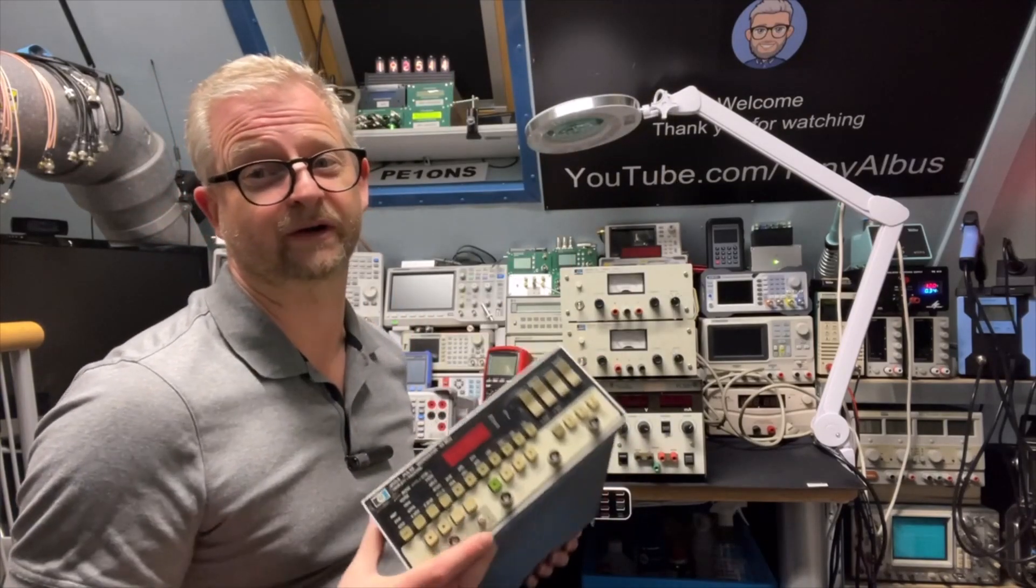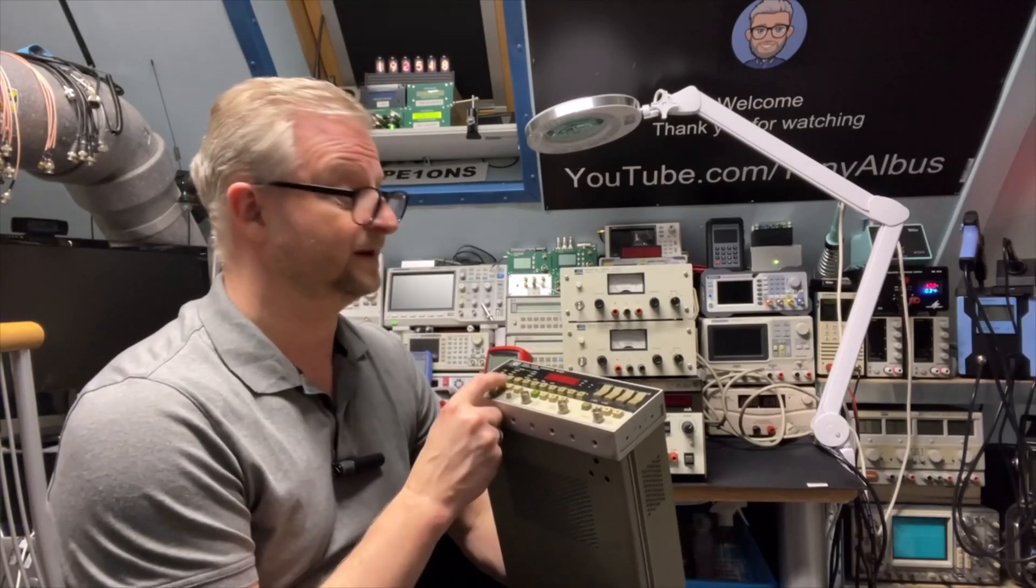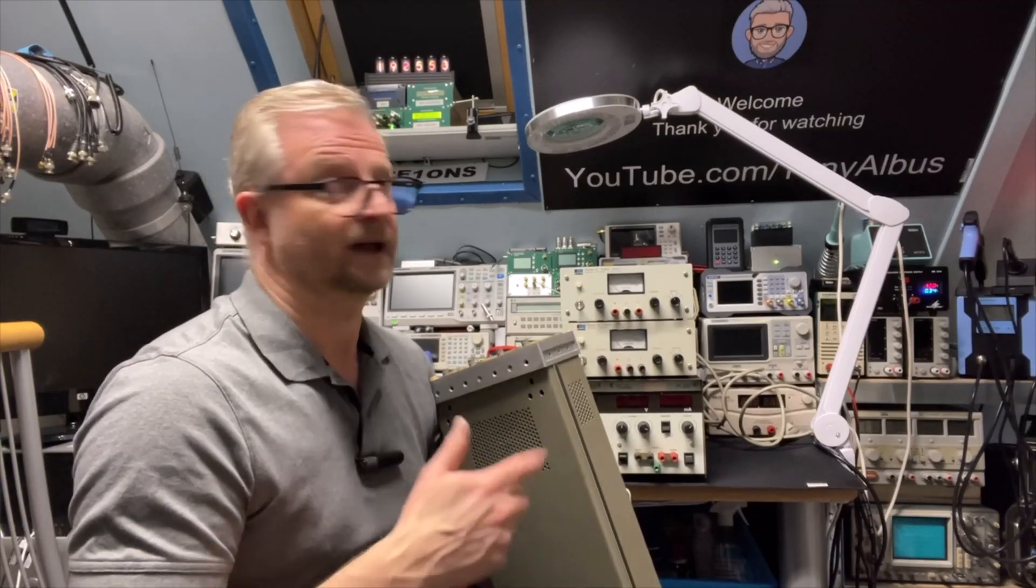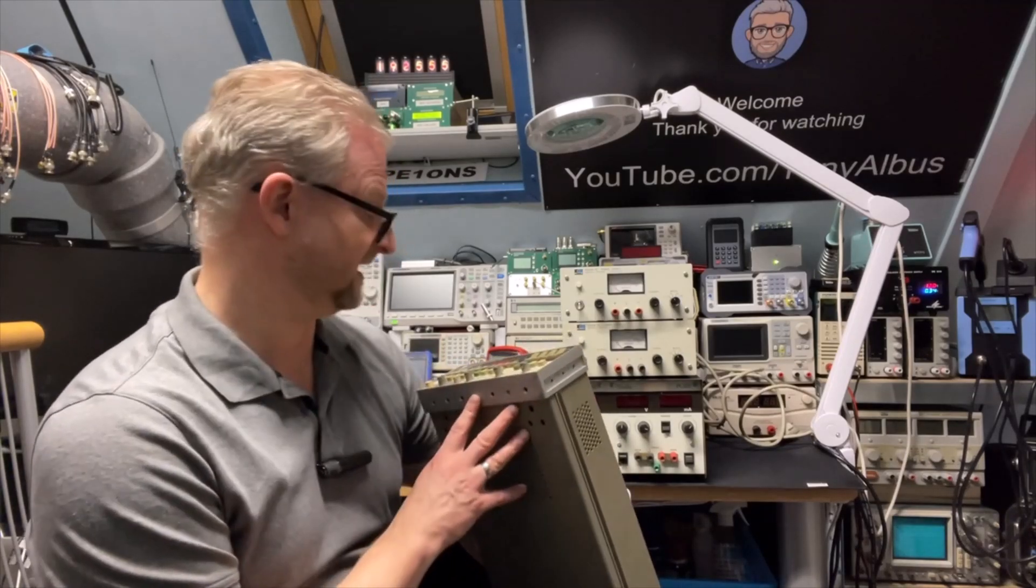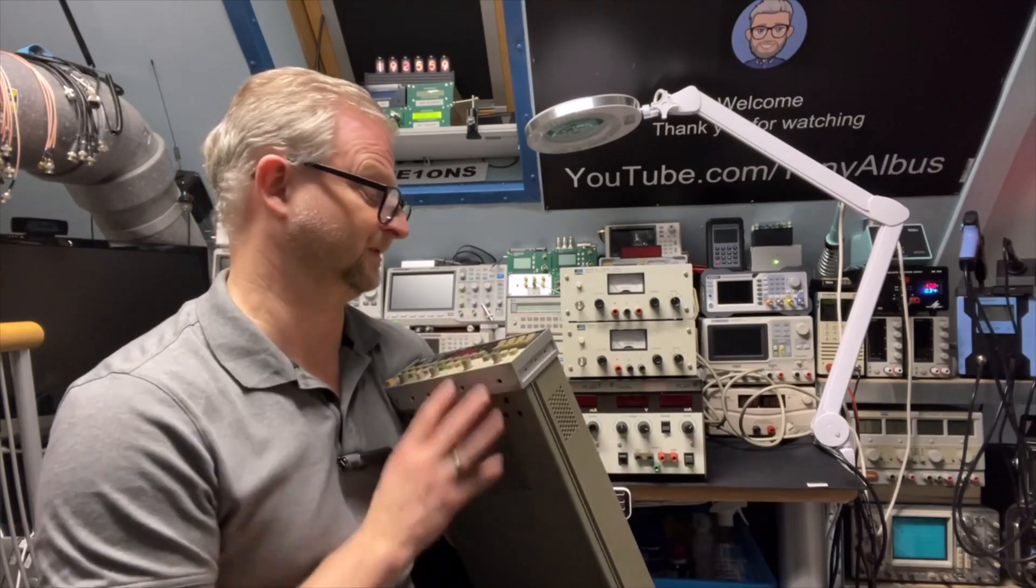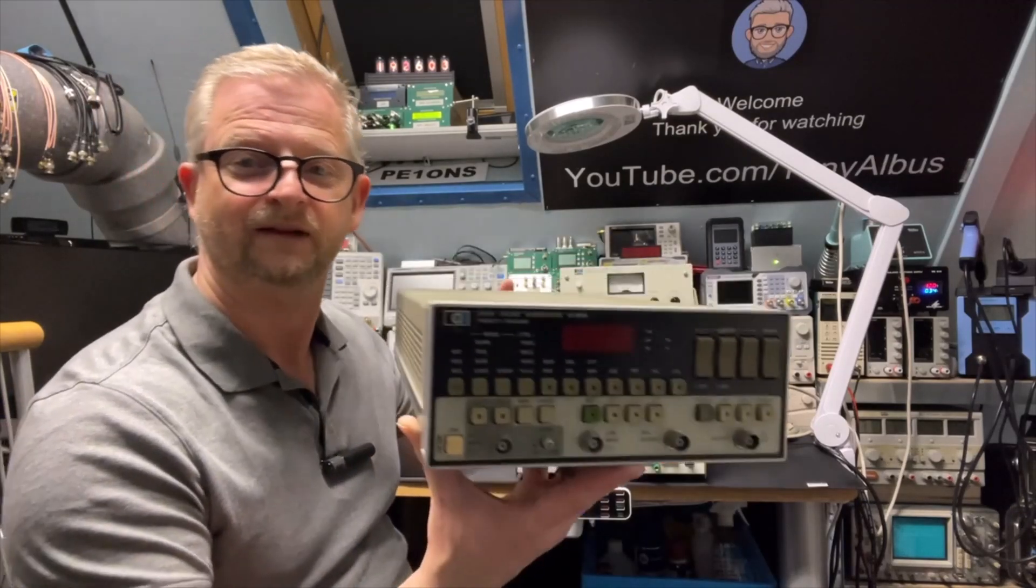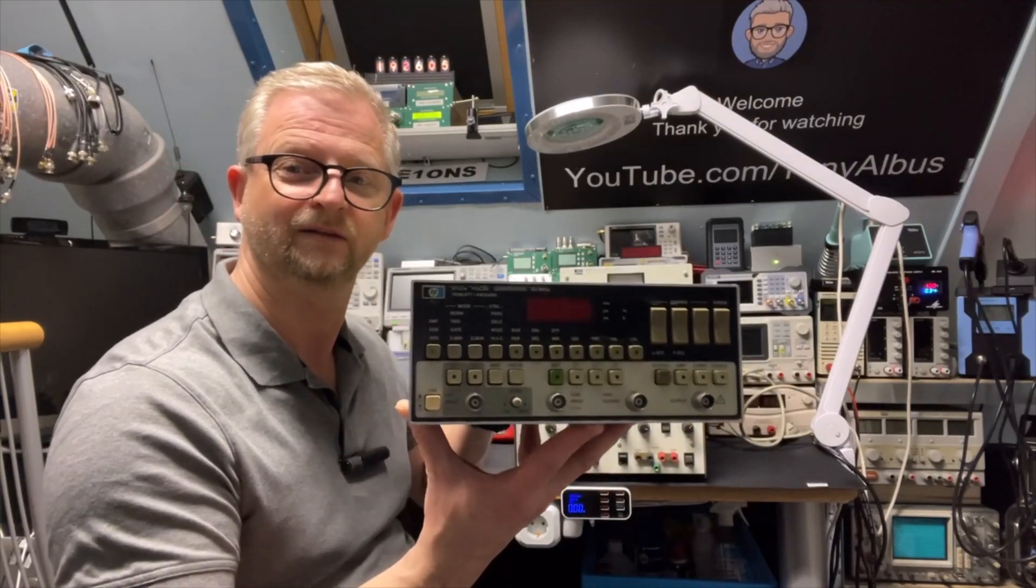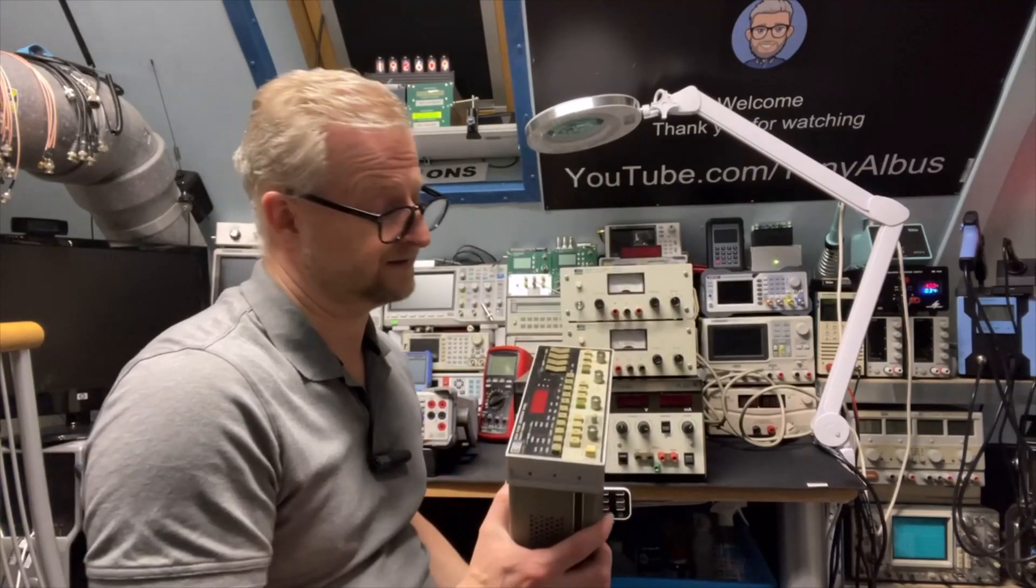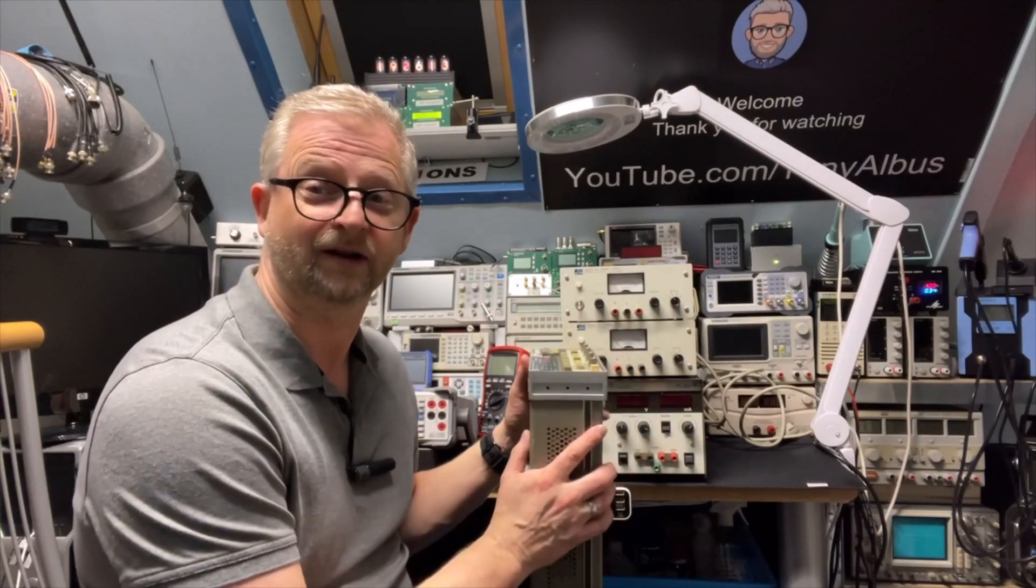So we're going to do a few quick tests just to see how it works. I already showed you once the 8116a, it's also 50 megahertz but that's more a function generator. This only does pulses. Also, it doesn't show you a frequency but you have to calculate it in seconds, milliseconds, nanoseconds, etc.